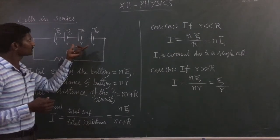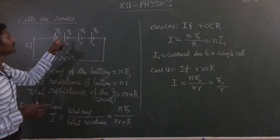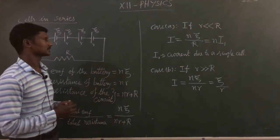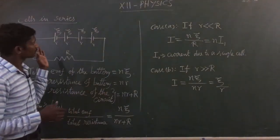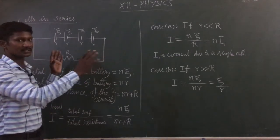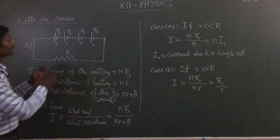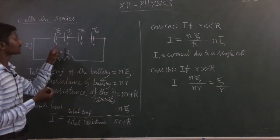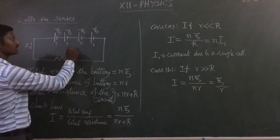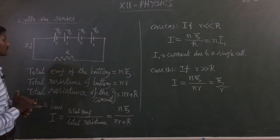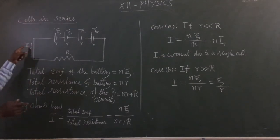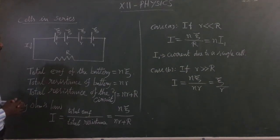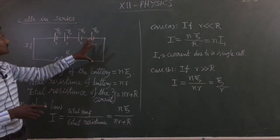Each cell has EMF ψ — that is equal EMF, ψ is equal for all cells. We include n number of cells. Each cell also has internal resistance small r, and all have equal internal resistance. Current I is flowing through the circuit, and capital R is the external resistance. This is the cells-in-series circuit.